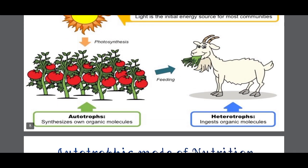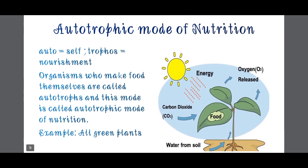The word 'autotrophic' is made of two words. 'Auto' means self and 'trophus' means nourishment, so this means self-nourishment. Organisms who make food themselves are called autotrophs, and this mode is called autotrophic mode of nutrition.